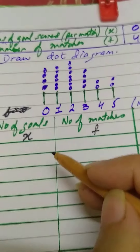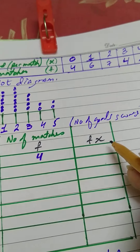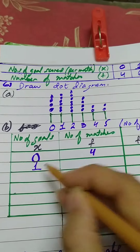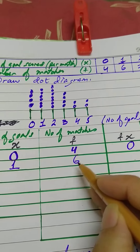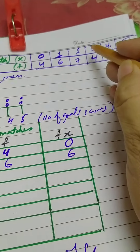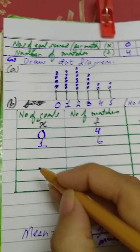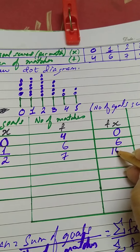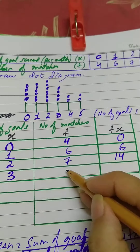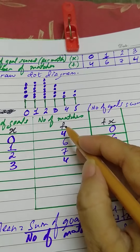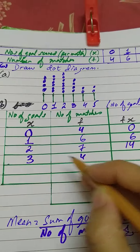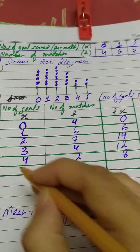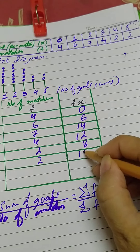Here x is number of goals and f is number of matches, so fx represents the total number of goals in those matches. Zero goals times four matches gives fx = 0. One goal times six matches gives fx = 6. Two goals times seven matches gives fx = 14. Three goals times four matches gives fx = 12. Four goals times two matches gives fx = 8. Five goals times two matches gives fx = 10.